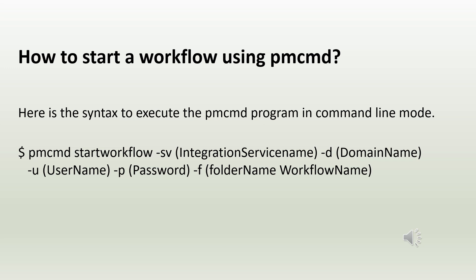The syntax is: PMCMD, space, start workflow — this is the action, whatever action you want to perform — space -SV followed by the integration service name, then space -D followed by the domain name, space -U followed by the username, -P space password, -F space folder name, and then the workflow name. To stop or abort, use the same syntax but replace 'start workflow' with the appropriate action.